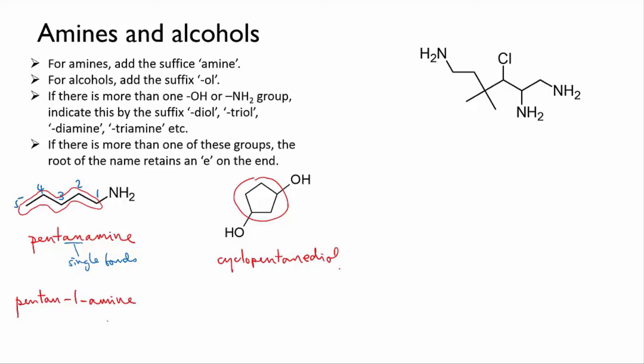For some reason, tradition dictates that we keep the E on the end of the pentane because it's a diol. So with just one alcohol group, it would be cyclopentanol, but with two, it becomes cyclopentanediol. Except if you're writing in German, they leave the E off.